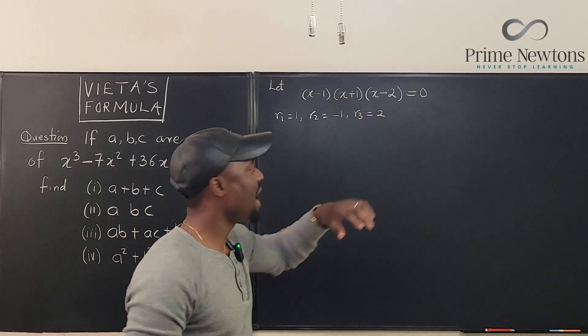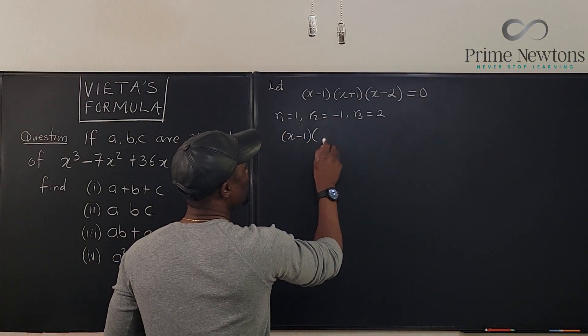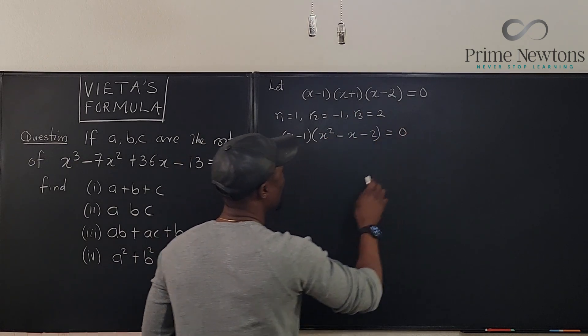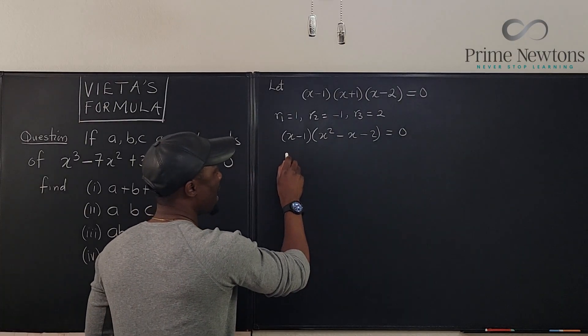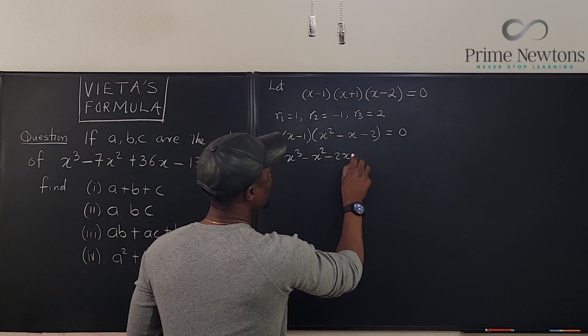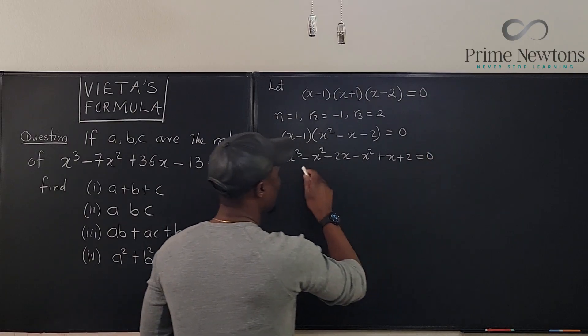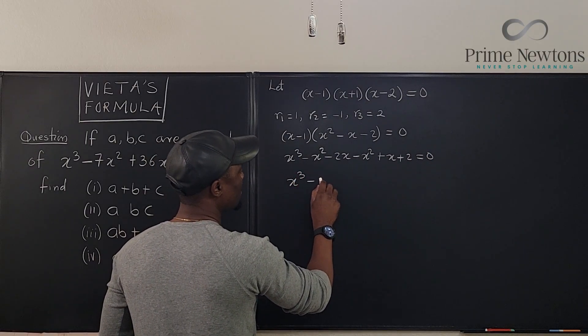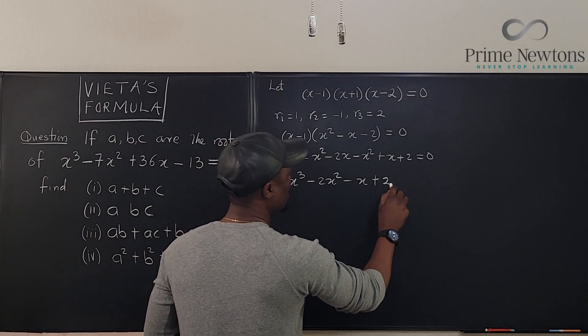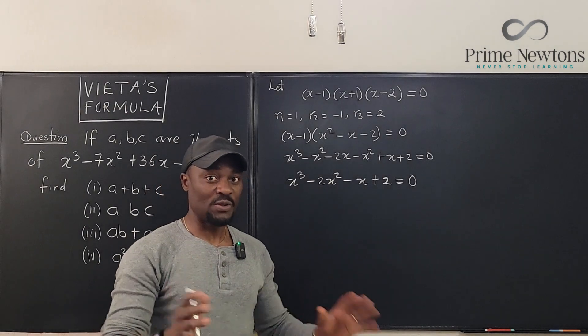So we clearly see that r1 equals one, r2 equals minus one, and r3 is going to be two. We want to verify that Vieta's formula works all the time for a cubic. Now we also have a cubic here. So before I use it for this problem, let's just do some verification. What I'm going to do is distribute what I have here. Let's distribute these two first. It's going to be x minus one times x squared minus x minus two equals zero. Let's do it one more time. We're going to have x cubed minus x squared minus 2x minus x squared plus x plus 2. So we clean this up. We're going to get x cubed minus 2x squared minus x plus 2 is equal to zero.